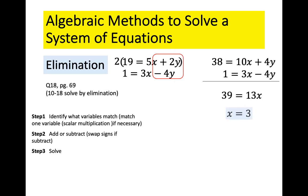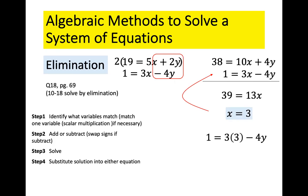Substitute x = 3 back in. Using the second equation: 3(3) + 4y = 17, so 9 + 4y = 17, 4y = 8, y = 2. Or using the first equation: 5(3) − 2y = 11, 15 − 2y = 11, −2y = −4, y = 2. Either way y = 2. Final answer: (3, 2). That's the complete algebra review for substitution and elimination.